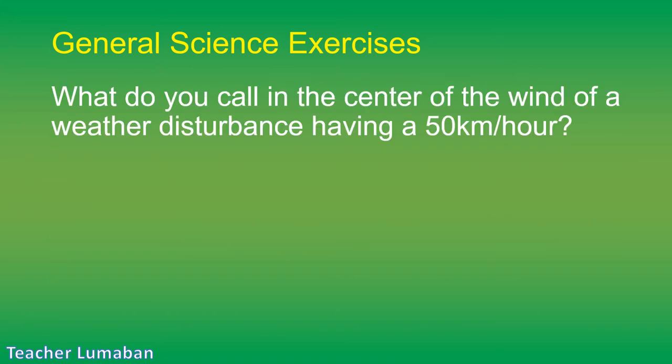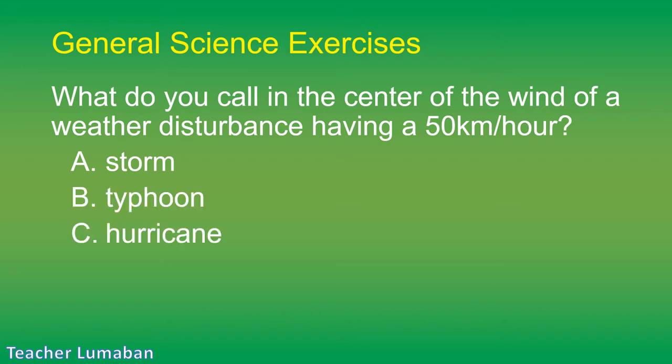What do you call the center of the wind of a weather disturbance having a 50 kilometer per hour wind? Letter A: storm. Letter B: typhoon. Letter C: hurricane. Letter D: tropical depression.